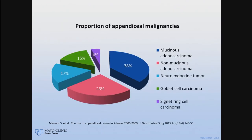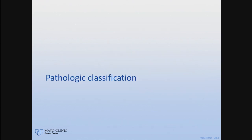There's a very heterogeneous group of tumors that make up appendiceal cancers, and it's important that we really describe what the tumor is rather than group them together. The most common is mucinous adenocarcinoma, comprising about 38%. Non-mucinous adenocarcinomas comprise 26%. Neuroendocrine tumors are now about 17%, goblet cell tumors — or mixed neuroendocrine adenocarcinoma tumors — about 15%, and signet ring cell tumors a small 4%. Now we'll talk about the pathologic classification.